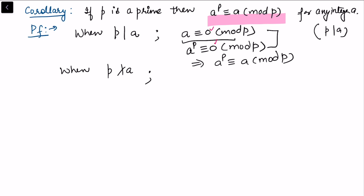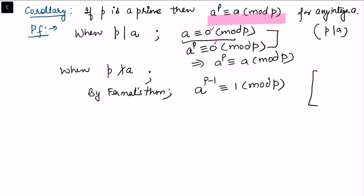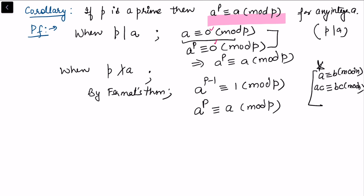In the second case, when p does not divide a: by Fermat's theorem, a^(p-1) ≡ 1 (mod p). Using the property that we can multiply both sides of a congruence by the same integer, we multiply both sides by a to obtain a^p ≡ a (mod p), which satisfies the required condition.